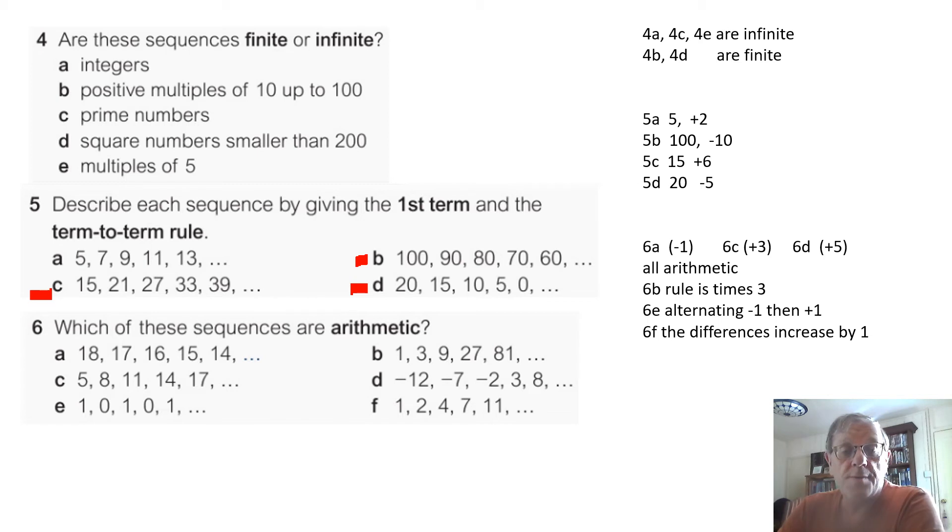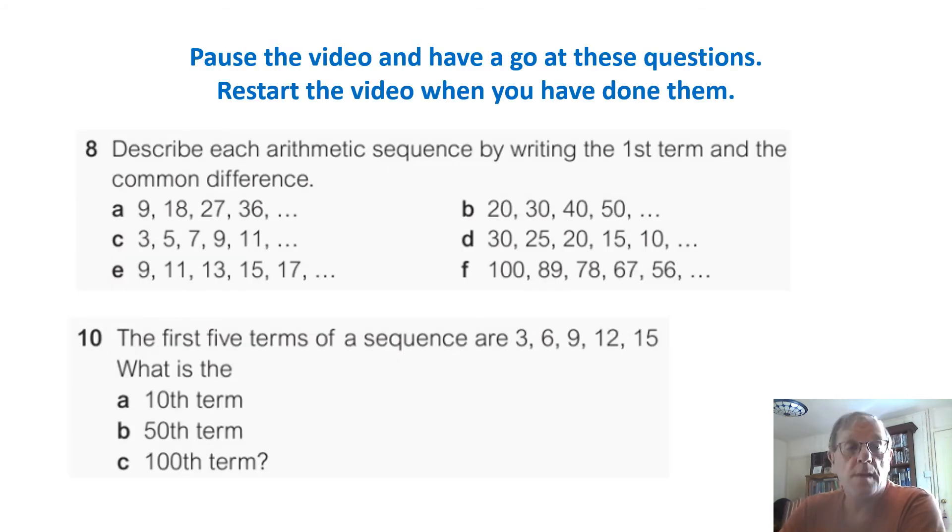B, that is multiplying by 3 each time. So that is not arithmetic, that happens to be called geometric or you may have heard the term recently exponential. 6e, that is an alternating sequence, plus 1, minus 1, plus 1, minus 1. And F, if you notice the differences between the numbers, it's the differences that are increasing by 1. Again, pause the video and have a go at these. Restart when you have done them.